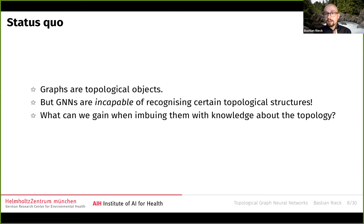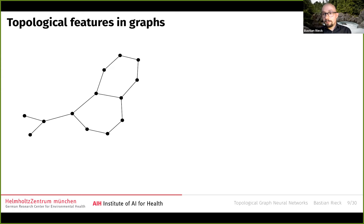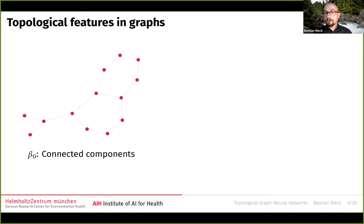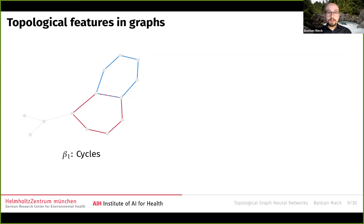Now, graphs are topological objects, and it turns out that GNNs and the WL test are both incapable of recognizing certain topological structures — we'll see a nice example of this later. The natural question for me and my collaborators was: what can we actually gain when imbuing them with more knowledge about topology? Given a graph, I'm talking predominantly about connected components and cycles, with the understanding that we could pick different representatives. We could also look at clique complexes, but for now we stay with beta-0 and beta-1.